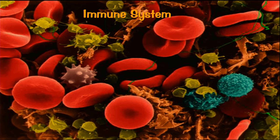White blood cells aren't really white — we call them that because red blood cells are red and they're not red. There are several different kinds of white blood cells, such as lymphocytes. The B cells, T cells, and natural killer cells are all lymphocytes. There are also the eating cells — neutrophils and macrophages — which eat things that shouldn't be in the body.